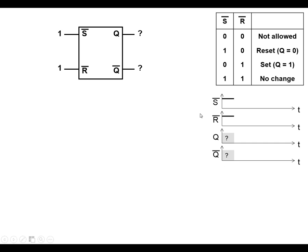We've got a timing diagram to show what's going on here. Both inputs are high at the moment. If we make Set go low, this gets us into the set state, which means that Q is going to go high. That's showing in the timing diagram.